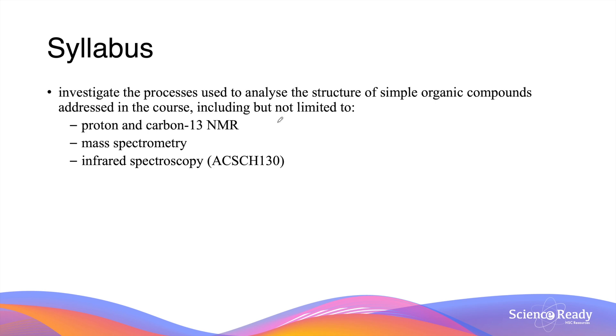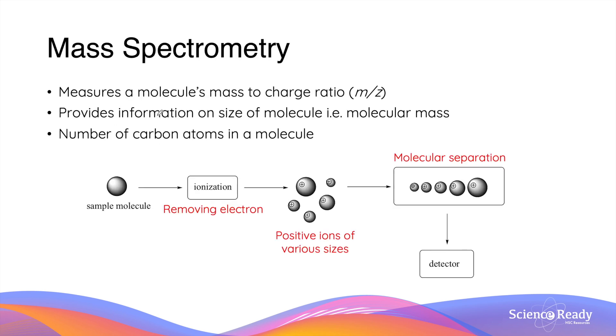Hello everybody. In this video we'll be looking at mass spectrometry. Mass spectrometry is another quantitative technique that measures a molecule's mass to charge ratio. That is the mass of the molecule divided by its charge. The main purpose of mass spectrometry is to provide information on the size of the molecule, its molecular mass or molar mass, and this gives indirect information on the number of carbon atoms in a particular organic molecule.